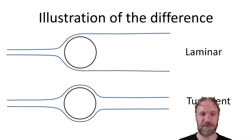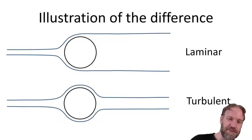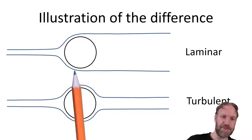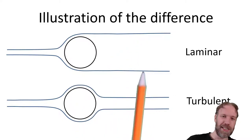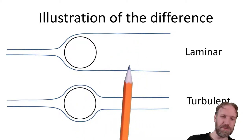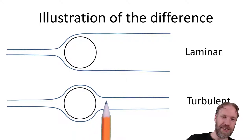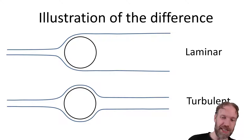To summarize: in the laminar case, flow separates early, creating a big separated region and high drag. In the turbulent case, the flow follows the surface a bit longer, we get a smaller separated region, and therefore less drag.